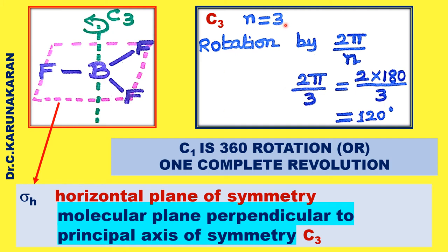C1 is 360 degree rotation. The C1 axis of symmetry is nothing but rotation by 360 degrees, or a complete revolution.